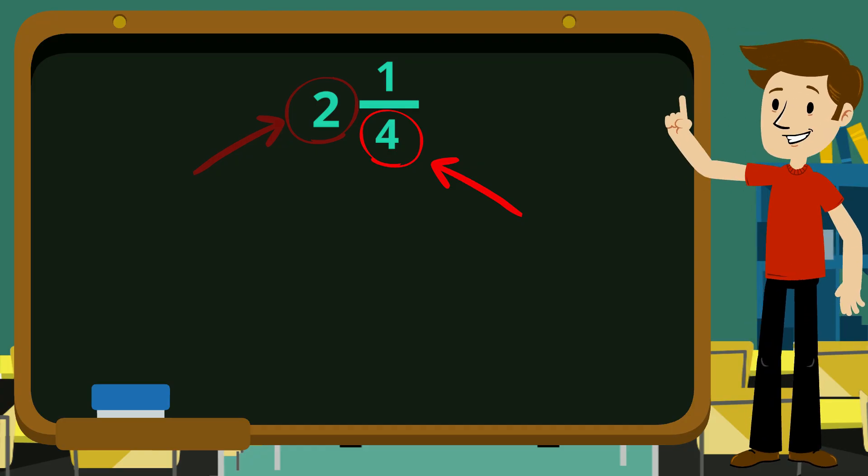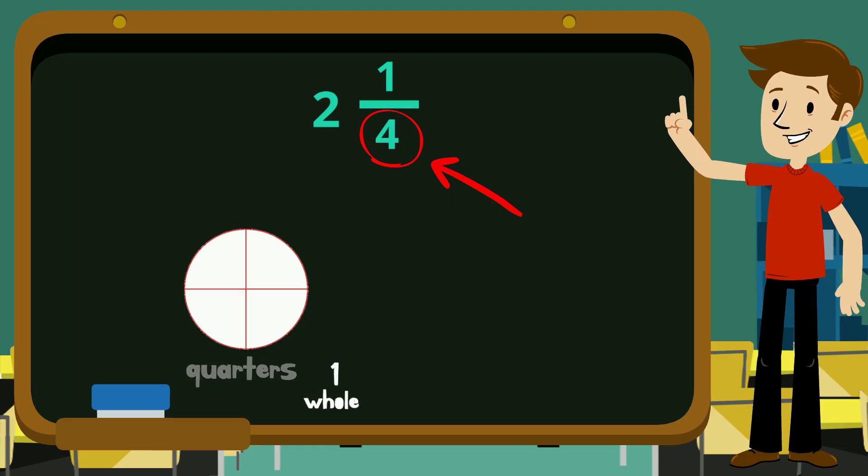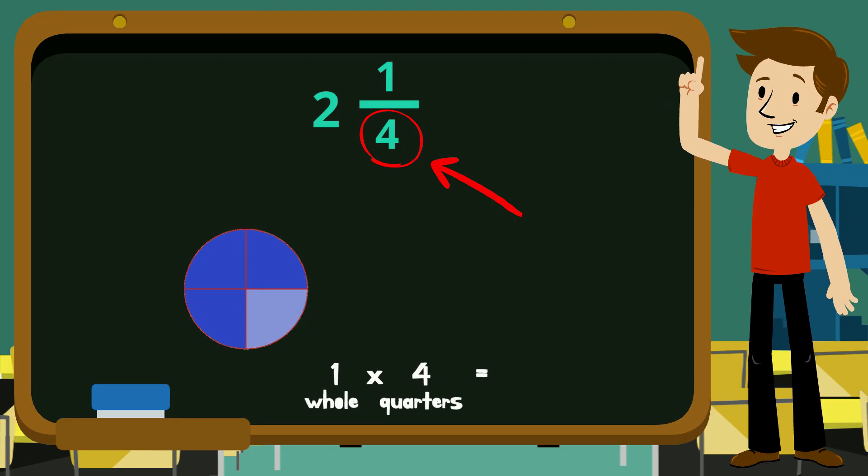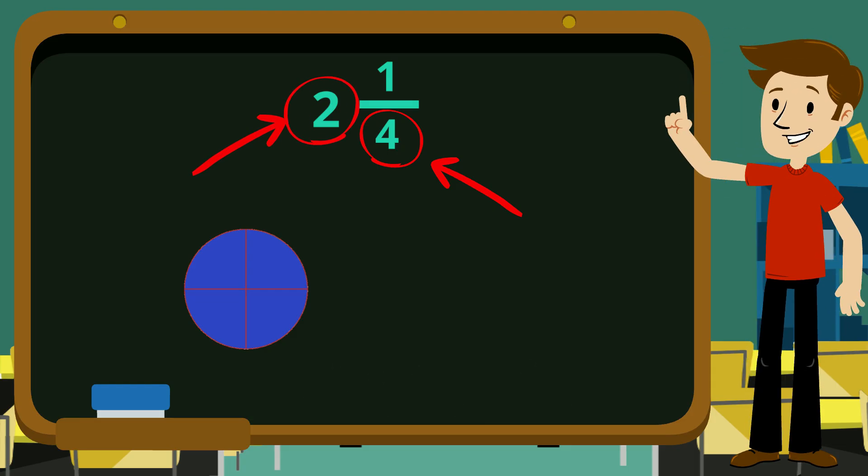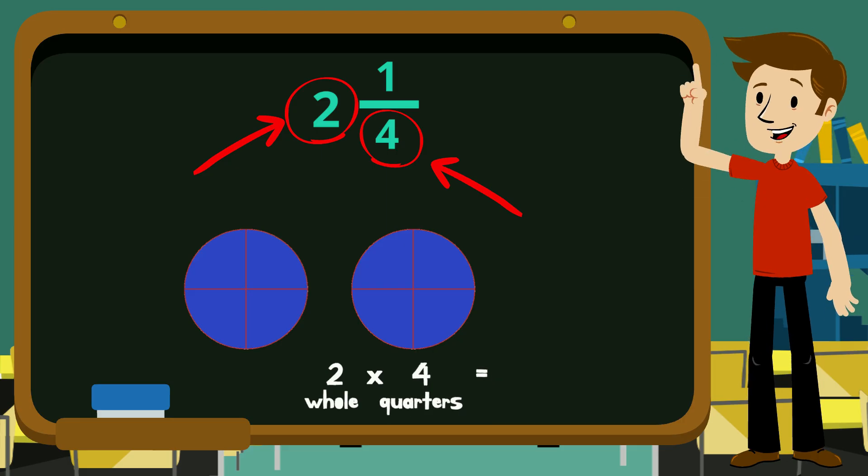Because if we're working with quarters and we've got one whole, how many quarters do we have altogether? That's right, four. So if we've got two whole, how many quarters would we have? Eight, because two lots of four is eight.